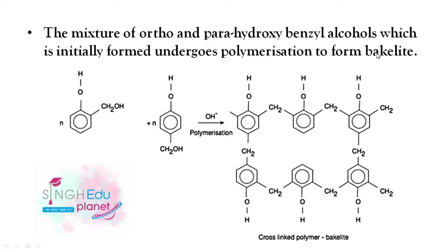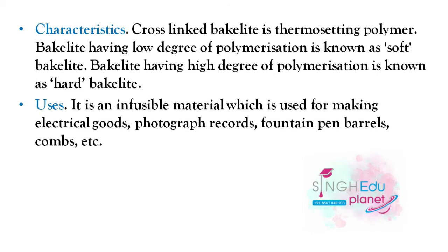During polymerization to form bakelite, CH2OH groups lose H2O, and the CH2 group forms bonds in the network chain. This results in a cross-linked polymer called bakelite, which is a thermosetting polymer.